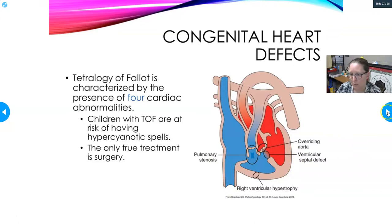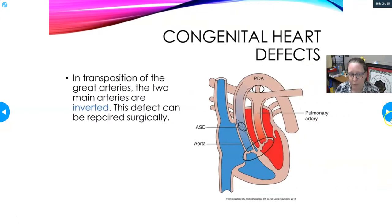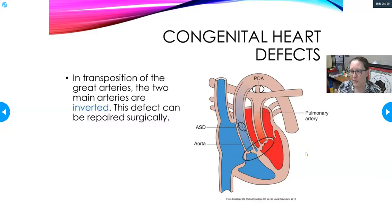Another defect that can be immediately life-threatening is transposition of the great arteries, where the two main arteries are inverted. The right side of the heart — which should pump to the lungs — instead pumps unoxygenated blood into the main aorta to the rest of the body. The left side — which should pump oxygenated blood to the body — instead pumps to the lungs. This requires immediate surgical correction.